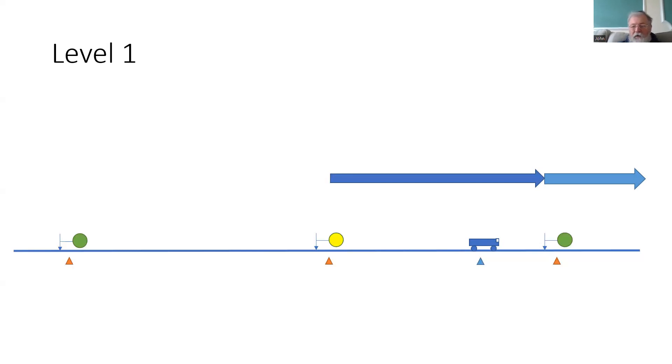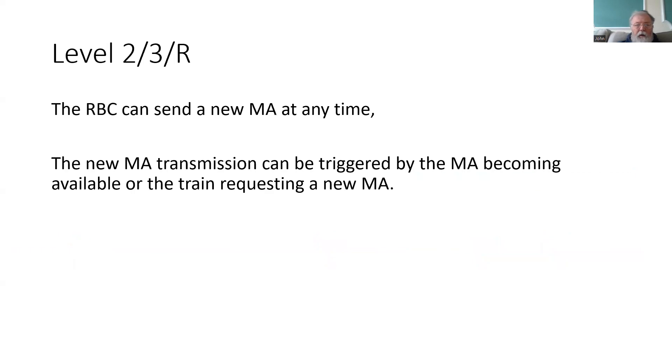When the train passes the green signal and reads the new information from the orange Balise group there, it will replace the stored MA. Now, of course, in levels 2 and 3, we don't have the need for infill because the RBC can send an MA at any time.